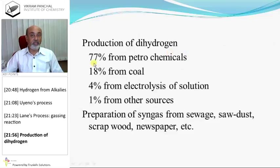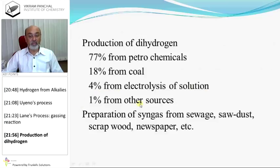Production of hydrogen by source: 77% from petrochemicals, 18% from coal, 4% from electrolysis of solution, and 1% from other sources.